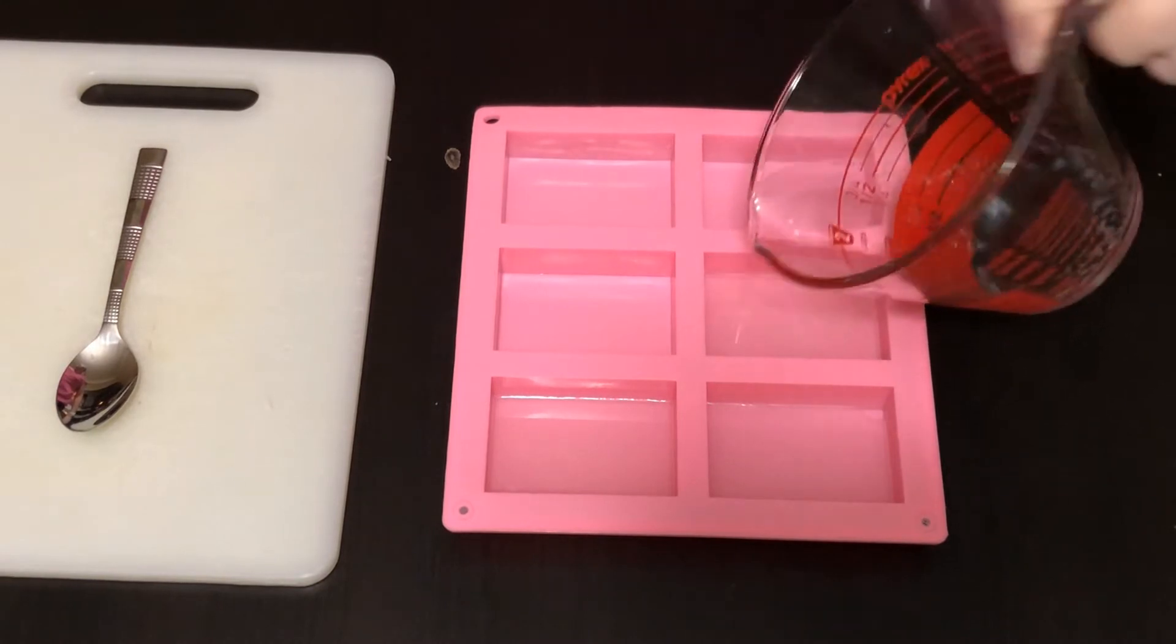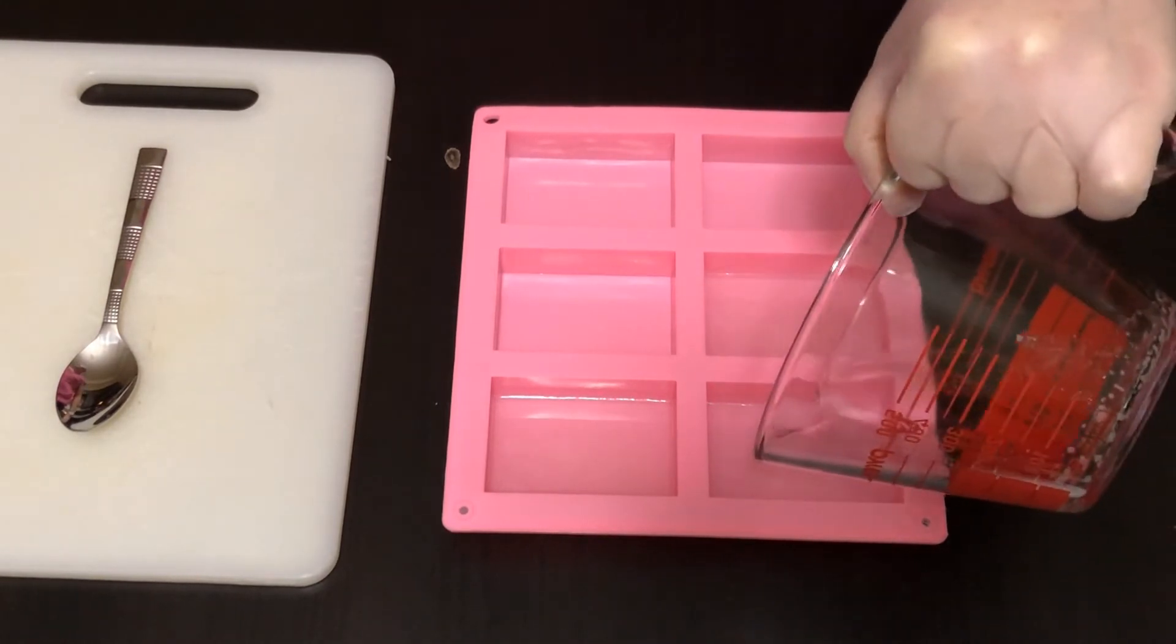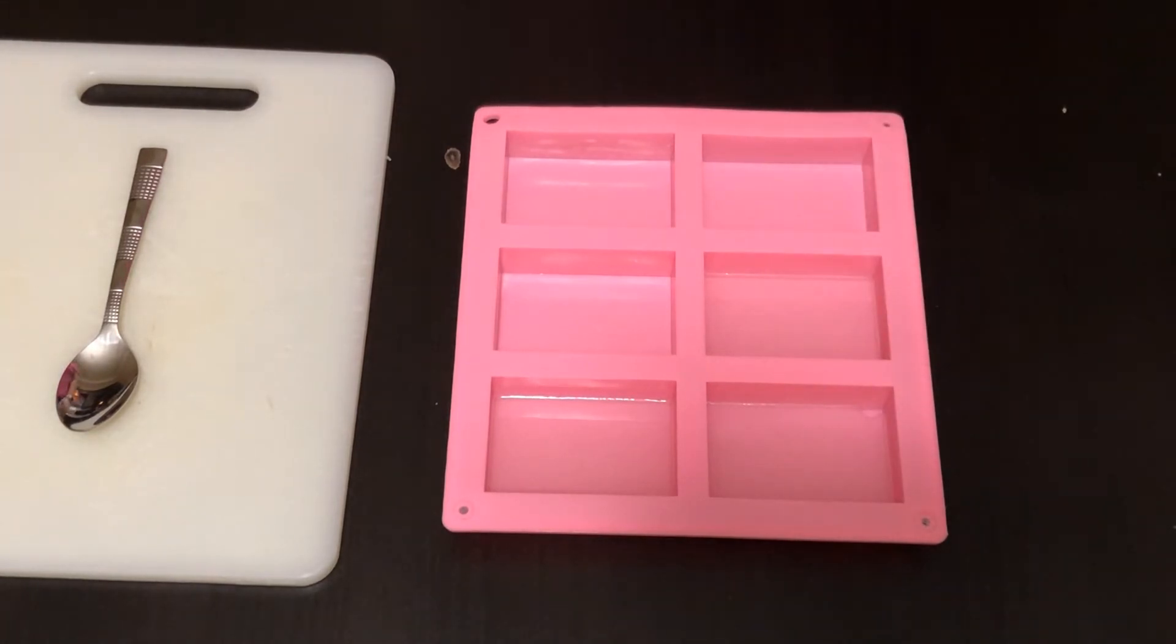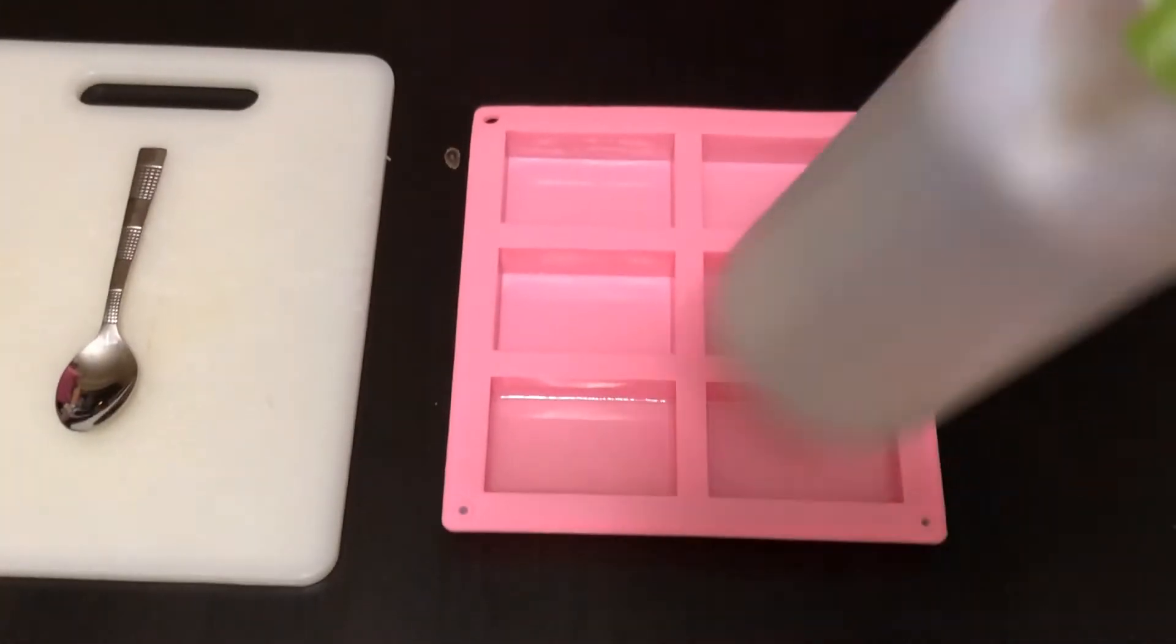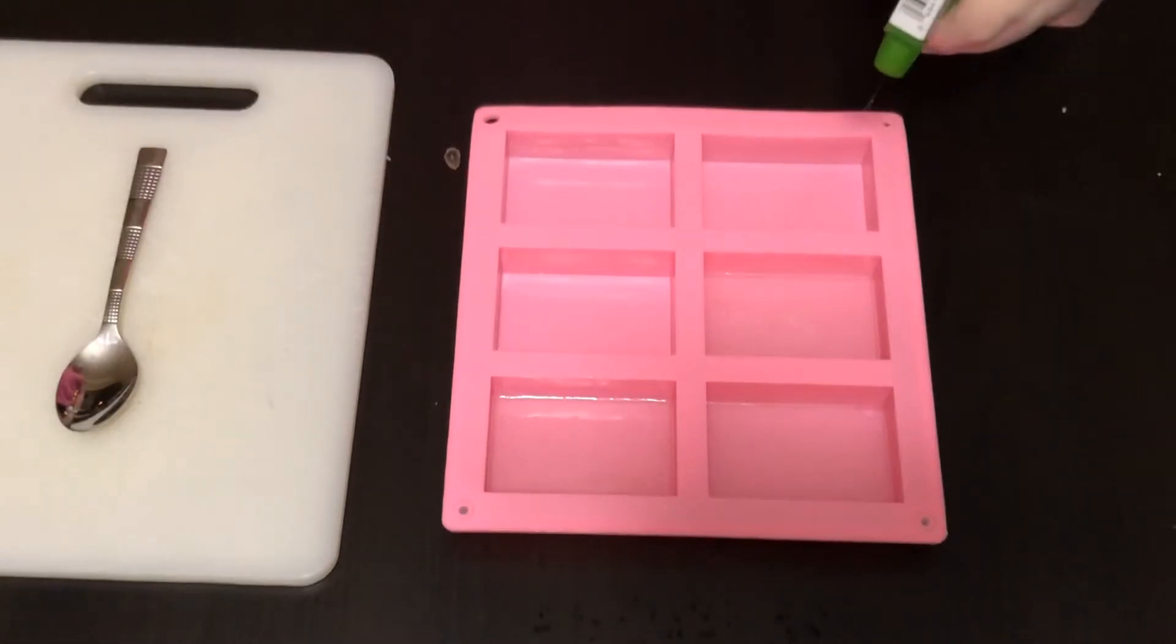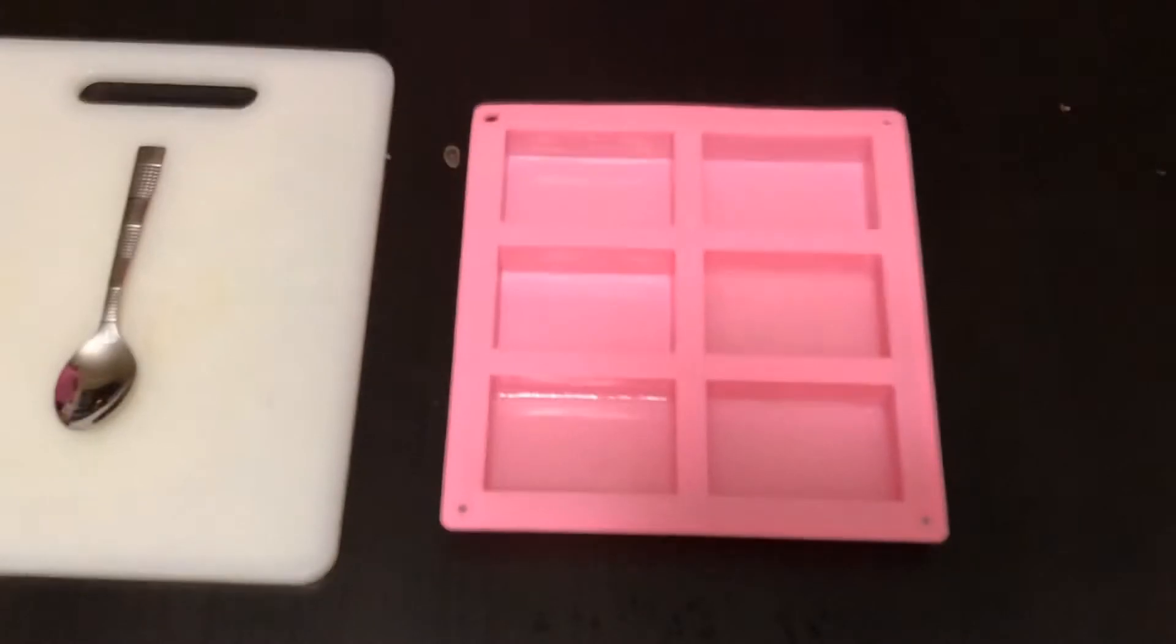So we're going to make three bars, so just getting that all in there, and then I'm going to go ahead and give it a spritz with some rubbing alcohol because we do want it to be pretty clear that way we can see our snowflake coming through.